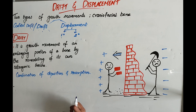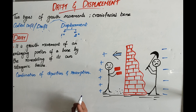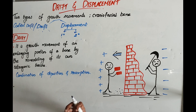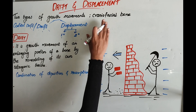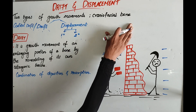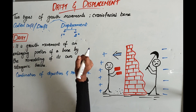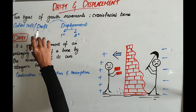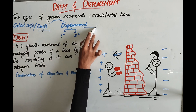In this video, we will be learning about drift and displacement in orthodontics. What is drift and displacement? They are the types of growth movements which we can see in the craniofacial region. In the craniofacial bone, we have two types of growth movements: drift and displacement.